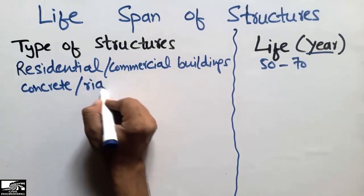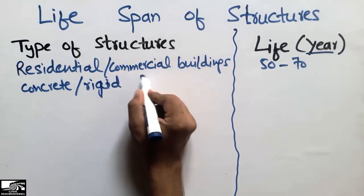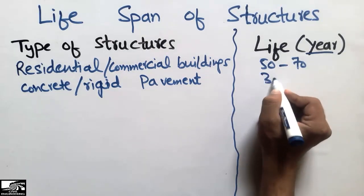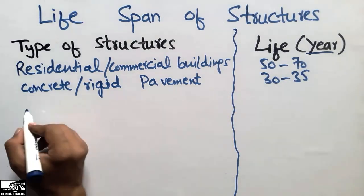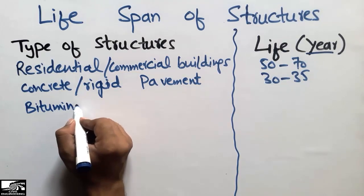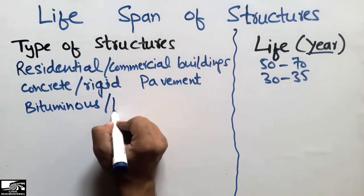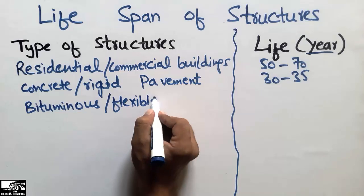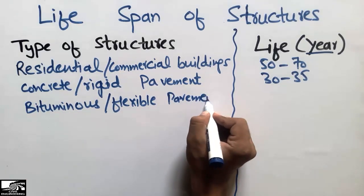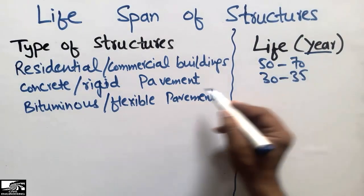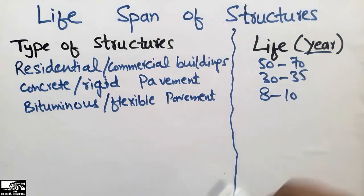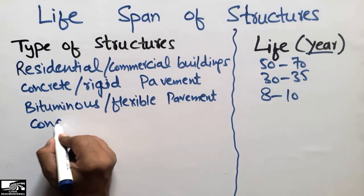Rigid pavements have a life expectancy period of 30 to 35 years. The third one is bituminous pavements, also called flexible pavements. Flexible pavements have a shorter life period than rigid pavements, generally around 8 to 10 years.